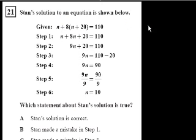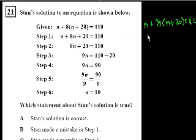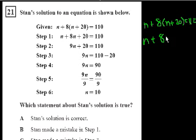Let's just think about how we would do it. So if we had n plus 8 times n plus 20 is equal to 110. The first thing you want to do is distribute this 8 times n plus 20. You don't want to multiply the whole n plus 8 — remember, you're doing order of operations, so this multiplication first. So you get n plus, then distribute this 8: 8n plus 160 is equal to 110. 8 times n plus 8 times 20 is 160.